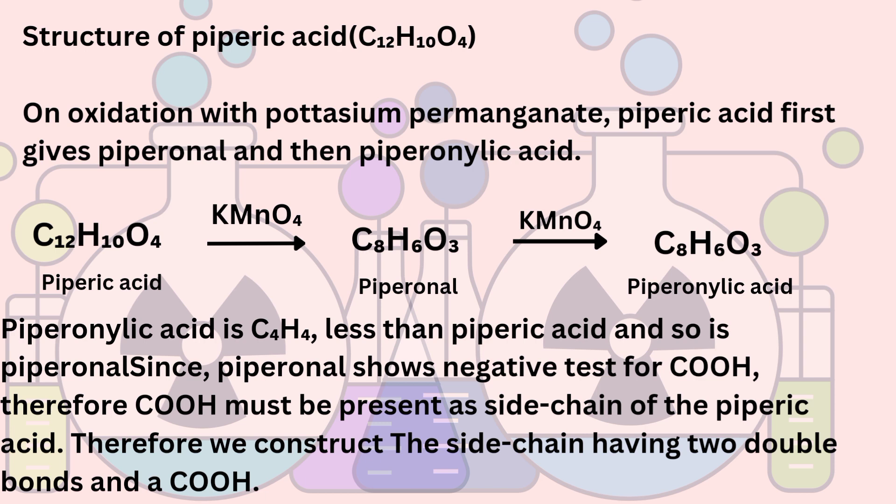On oxidation with potassium permanganate, piperic acid first gives piperonil and then piperonilic acid. Piperonilic acid is C4H4 less than piperic acid. Piperonil shows a negative test for the carboxylic group, therefore we assume that the side chain may have two double bonds and a carboxylic group. We have to find out and confirm the structure of piperonilic acid and then piperonil — though the reactants and products have almost identical names.